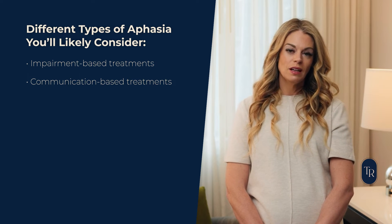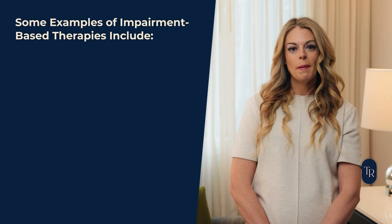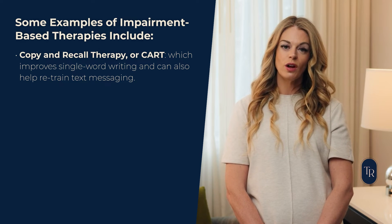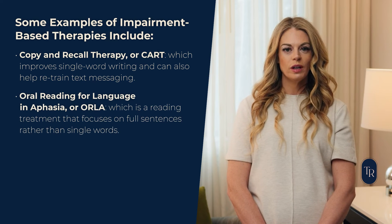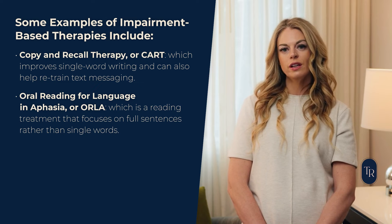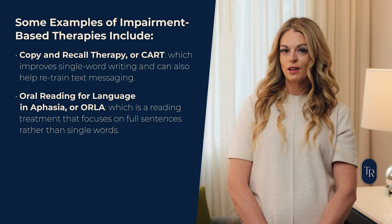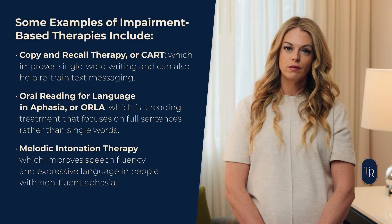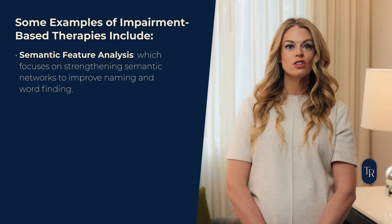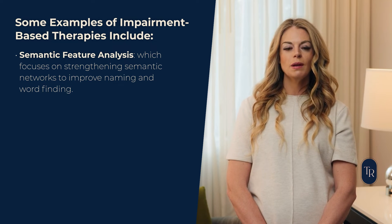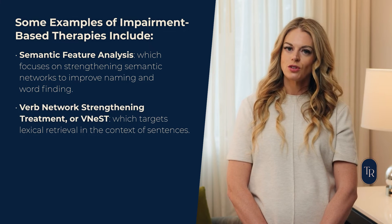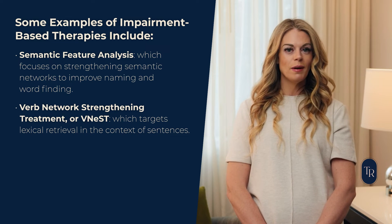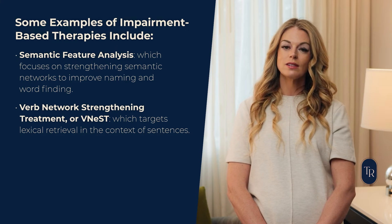Impairment-based therapies focus on rehabilitating the underlying deficits. Some examples include copy and recall therapy, or CART, which improves single-word writing and can also help retrain text messaging; oral reading for language in aphasia, or ORLA, which is a reading treatment that focuses on full sentences rather than single words; melodic intonation therapy, which improves speech fluency and expressive language in people with non-fluent aphasia; semantic feature analysis, which focuses on strengthening semantic networks to improve naming and word finding; and verb network strengthening treatment, or VNEST, which targets lexical retrieval in the context of sentences — you give a person a verb and ask them to create sentences when provided a subject and direct object.